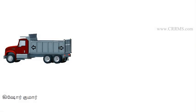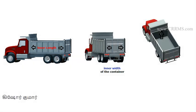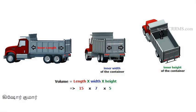Now let's see how to measure and calculate the cubic feet of sand in a truckload. You need to measure the inner length, inner width, and inner depth or height of the truck's container. Volume equals length × width × height. For example, if the inner length is 15 feet, inner width is 7 feet, and height is 5 feet, then 15 × 7 × 5 = 525 CFT. This is how you measure and calculate truckloads on site when purchasing M sand or any other sand.